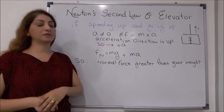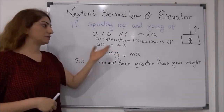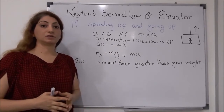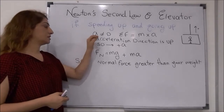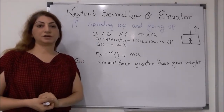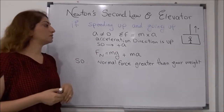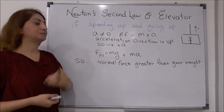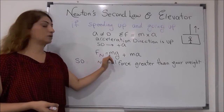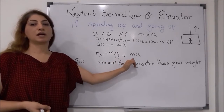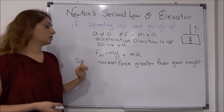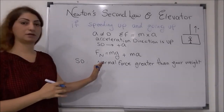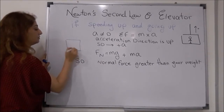Now let's see if the person is in the elevator and the elevator is speeding up and moving upward. What kind of forces are acting on the person? The first thing we have to know is that there is acceleration here which is positive because it is upward — the elevator is moving up. This means that the sum of the forces should be equal to mass times acceleration. The normal force can be calculated by m times g plus m times acceleration.